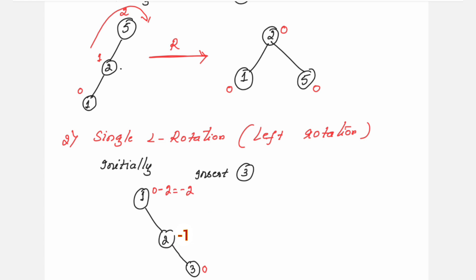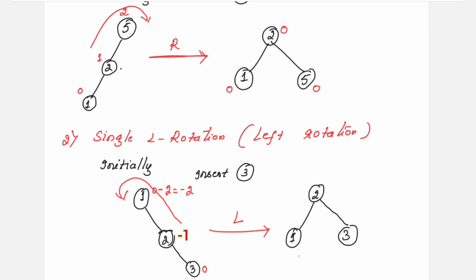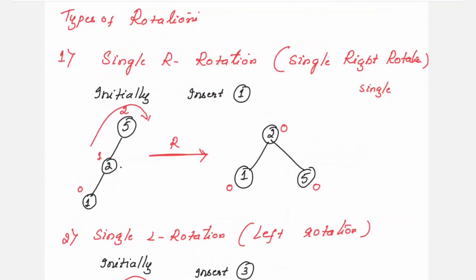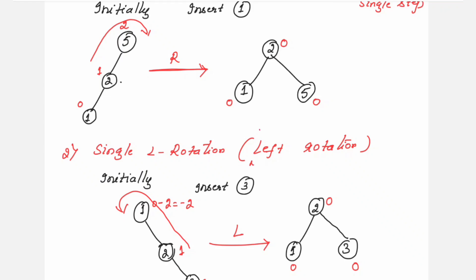Minus 2 is not acceptable, so you need to balance by performing the left rotation. Carry out the left rotation to the left side: node 1 will move down, node 2 will take the center position, and node 3 will be on the right. This balances the tree. This is called single left rotation and is done in one step — same as the single right rotation.